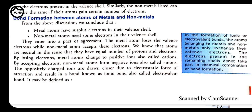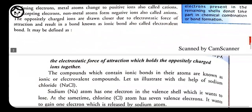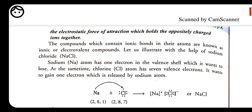Chlorine has atomic number 17, so it has 17 protons and 17 electrons. By gaining one electron, the number of electrons increases to 18, giving chlorine one negative charge. Because of these oppositely charged ions coming closer together, bond formation takes place. This is called an electrovalent bond — defined as the force of attraction which holds oppositely charged ions together — also called an ionic bond.